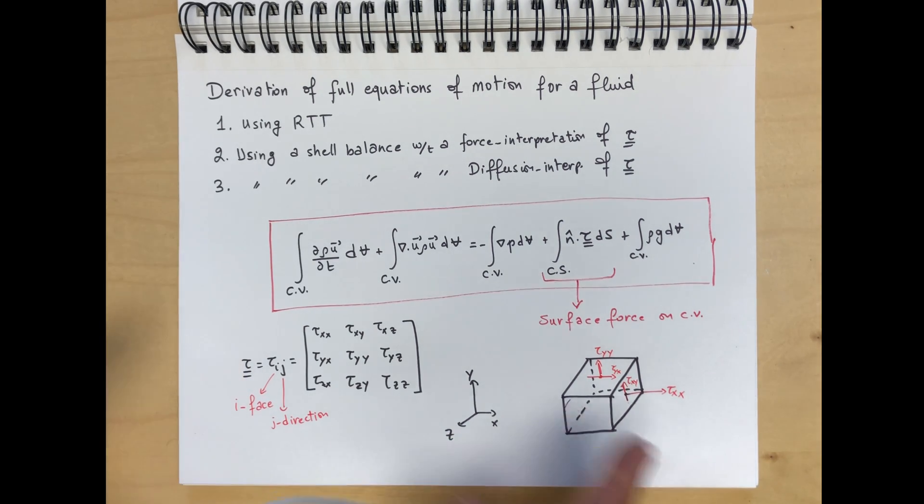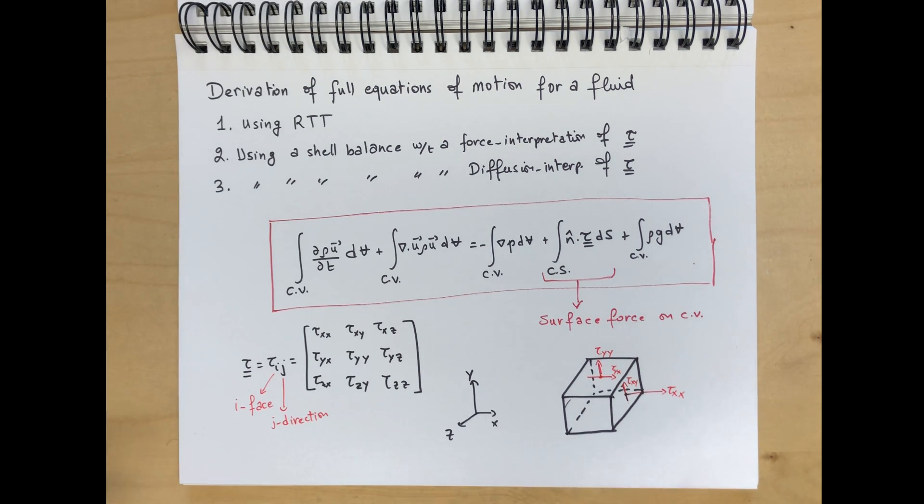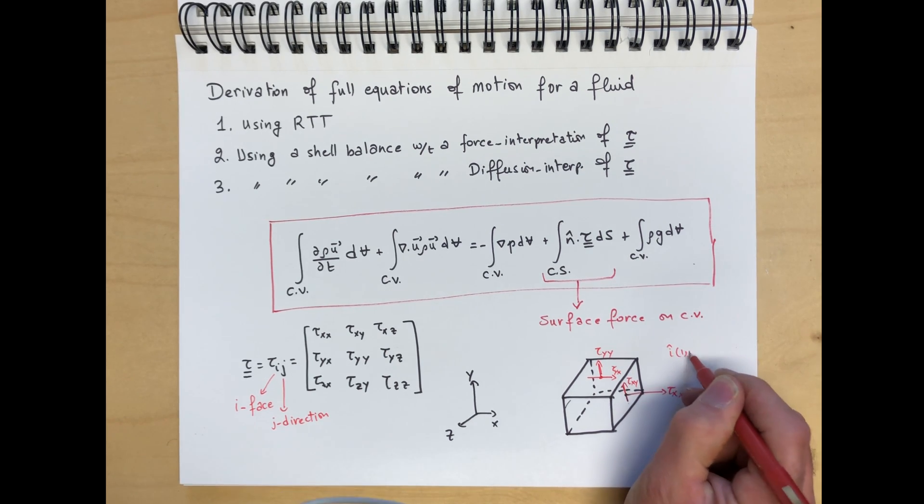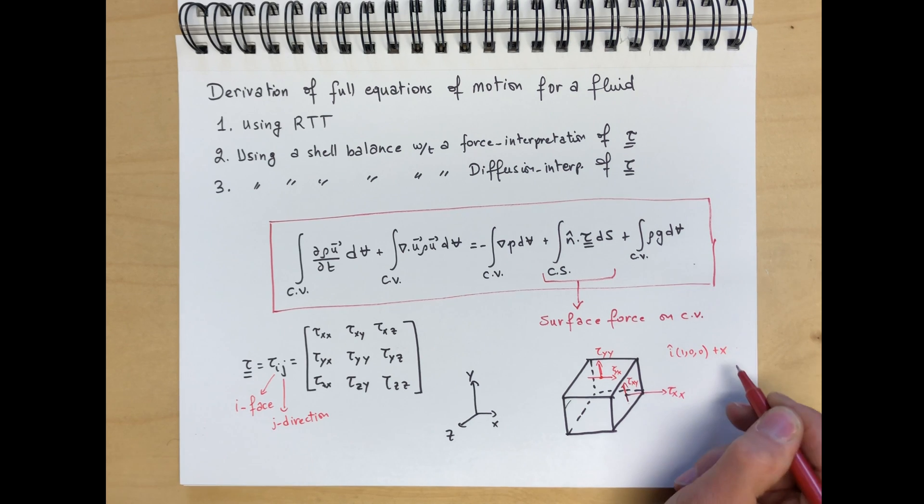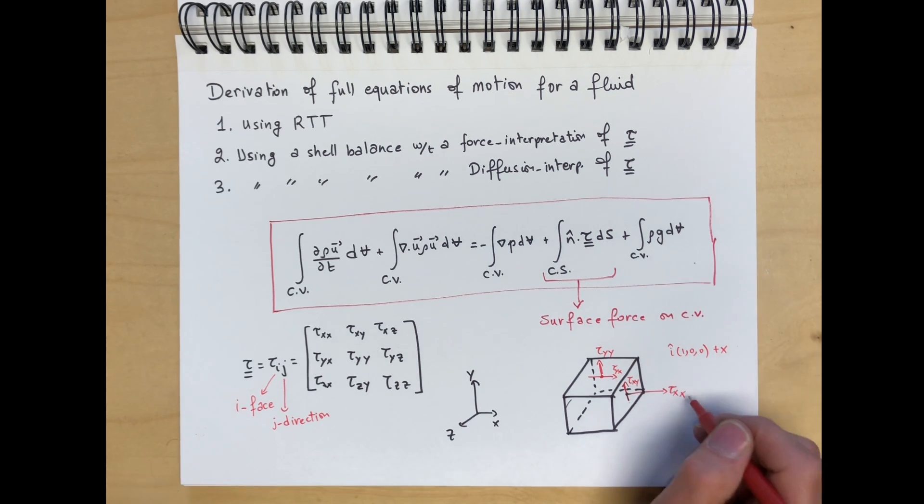There are also stresses acting on the other faces. As we shrink the element to zero, that is going to give us the divergence of the stress tensor. But we need to designate a notation and a sign convention for the stresses. We say a stress is positive if it is acting on a face where the unit normal is in the positive coordinate direction. So on this face, for example, tau xx, the unit normal is i. It's acting in the plus x direction. So if the stress will be positive, we define the stress as being positive if it's acting in the plus x direction.